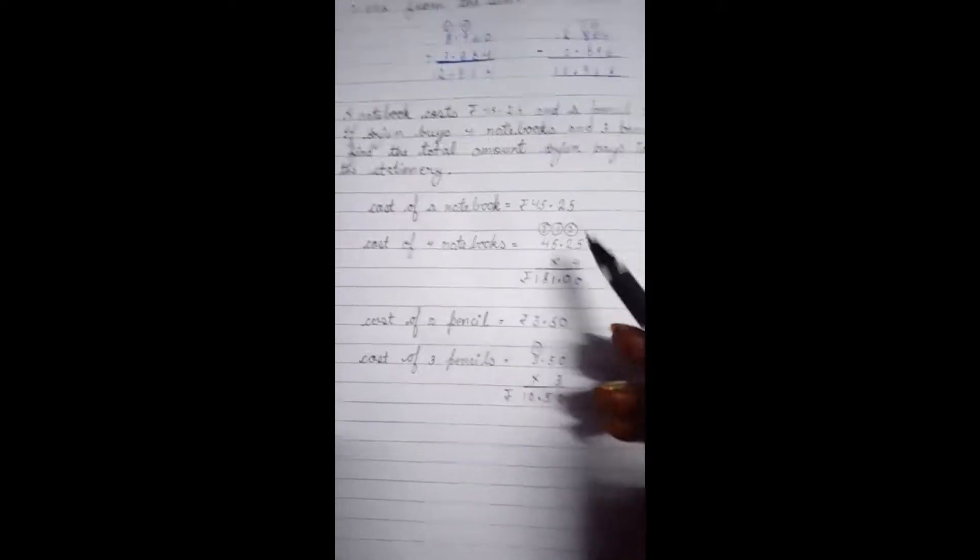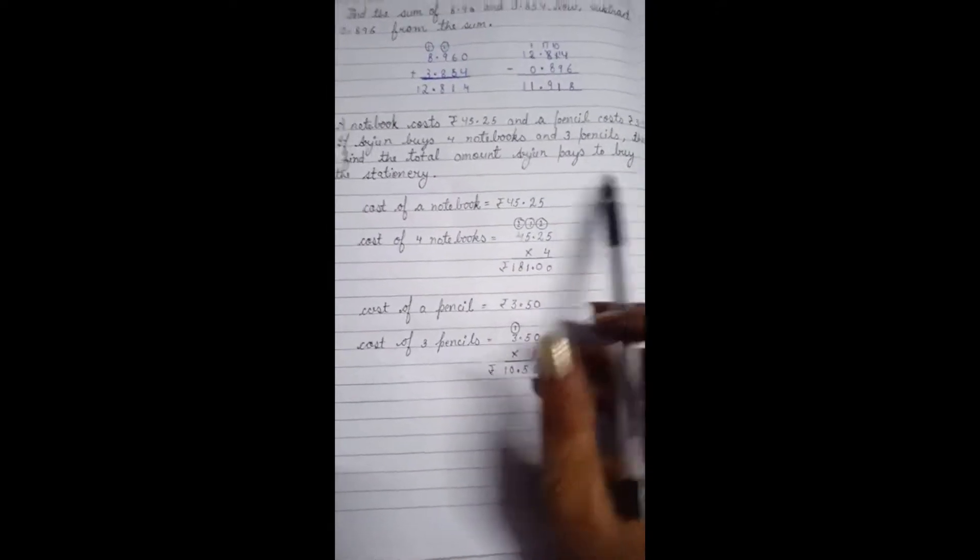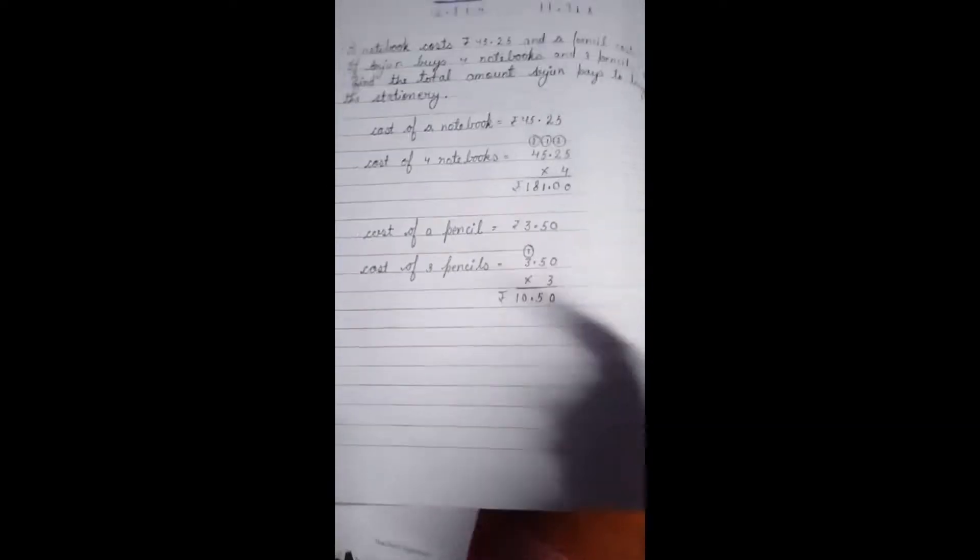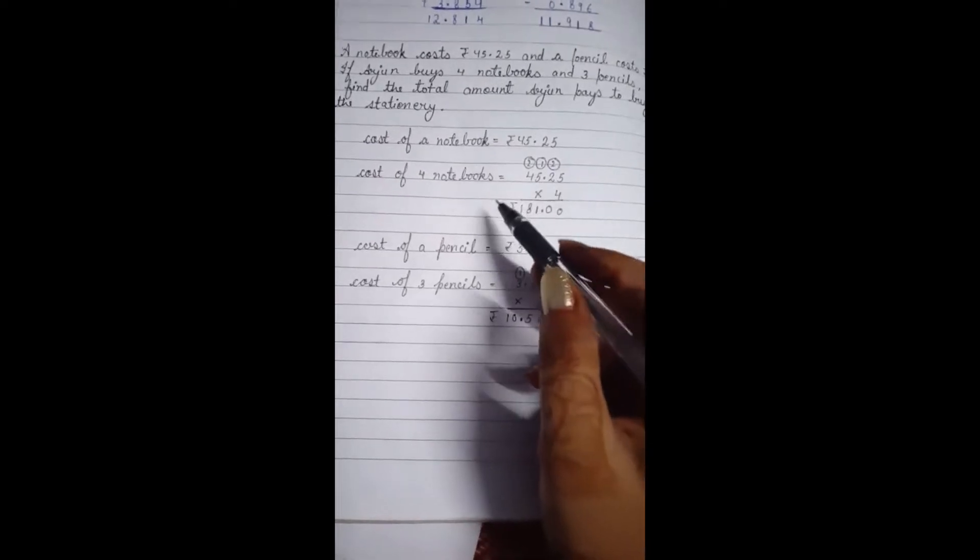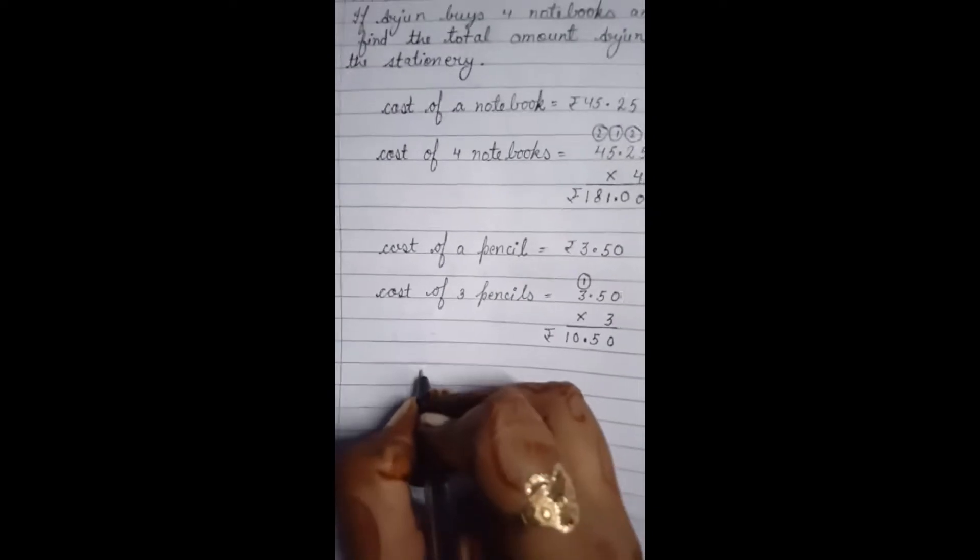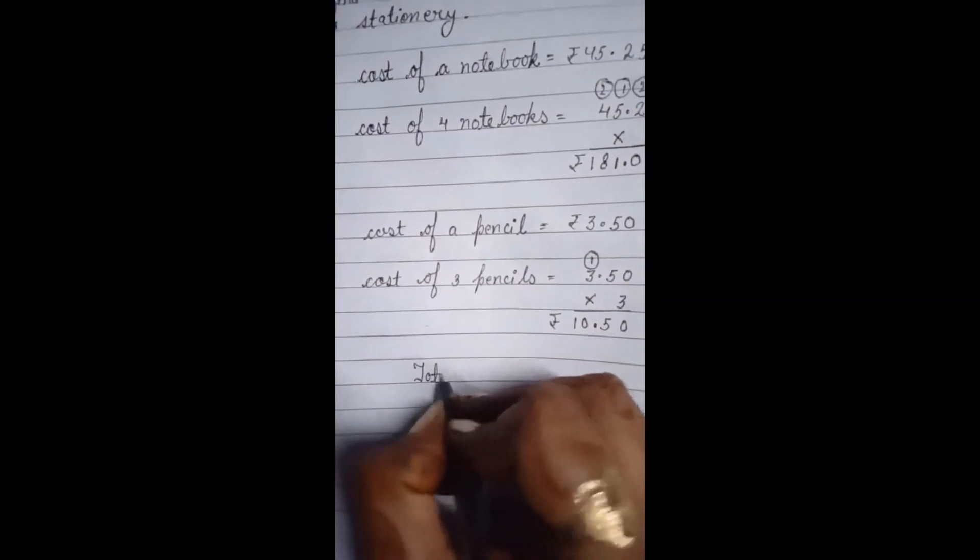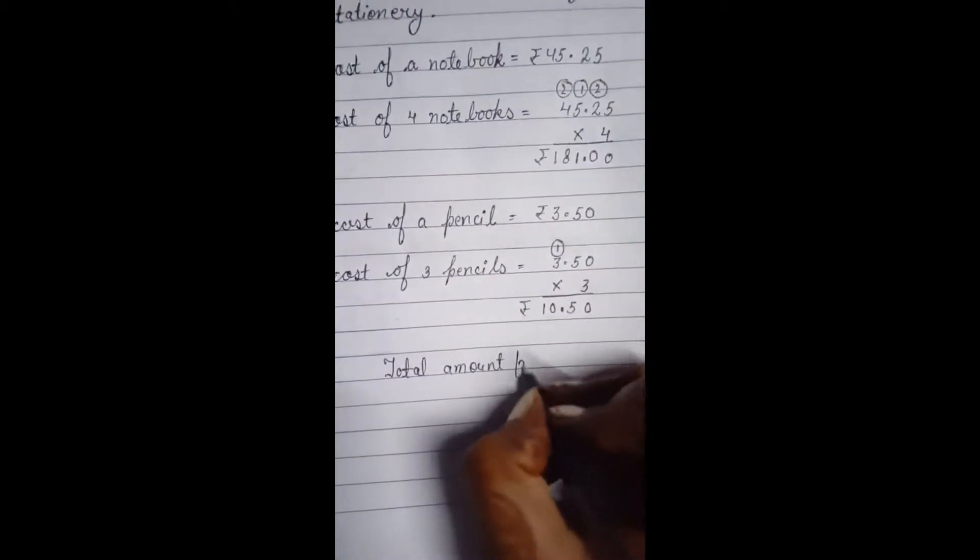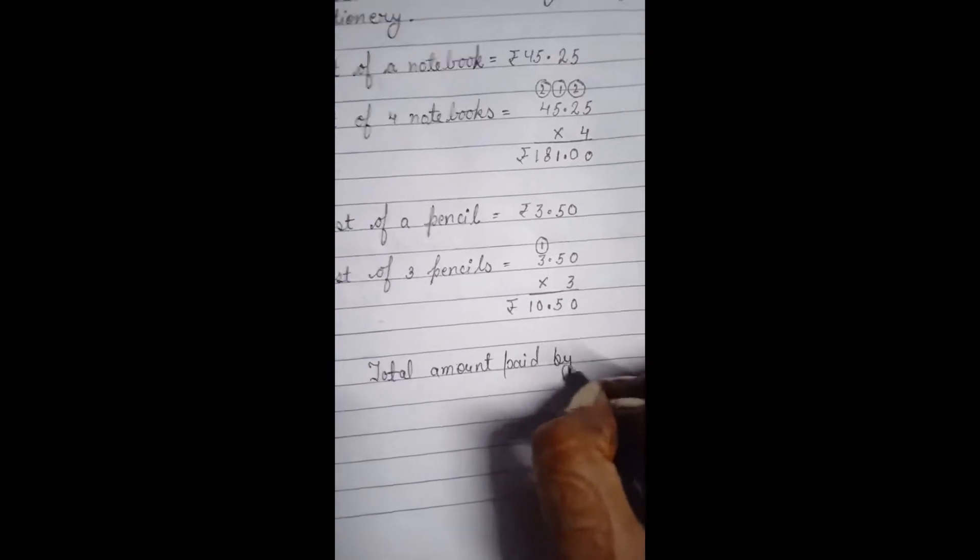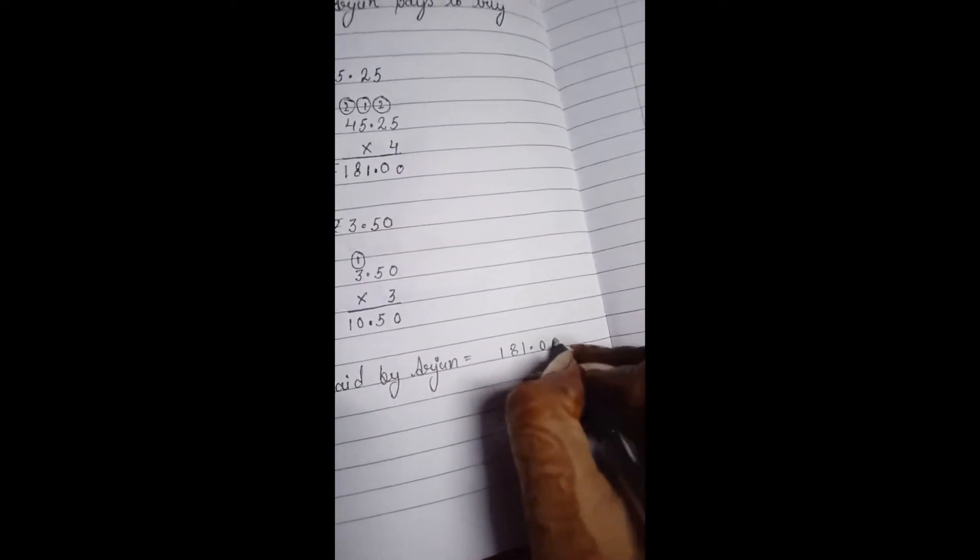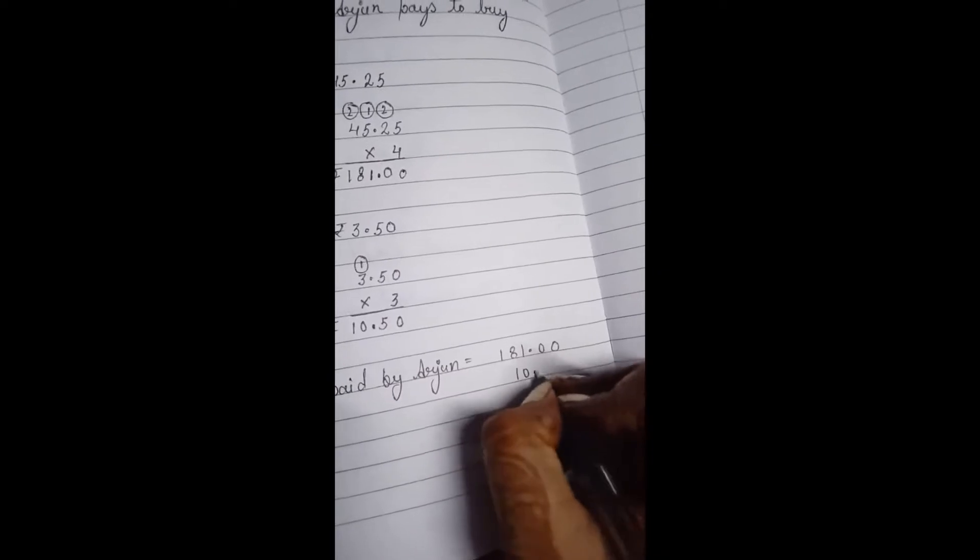Now we have to find out the total amount which Arjun has paid to the shopkeeper. So let us add the amount which is given for the notebooks and for the pencils. Here we will write total amount paid by Arjun. Now we will add 181.00 and 10 rupees 50 paise.